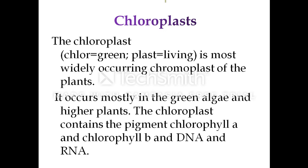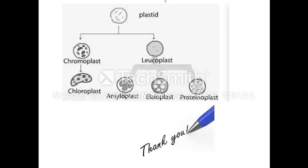This video lecture covers the development of plastids into different types: leucoplast, chromoplast, and chloroplast. Leucoplasts are further classified based on the type of food material or biomolecule they store. This video provides an introduction to how chloroplast is originated from plastids. In the next video, we will learn about the structure and function of the chloroplast. I hope you understood today's topic on plastids. Thank you.